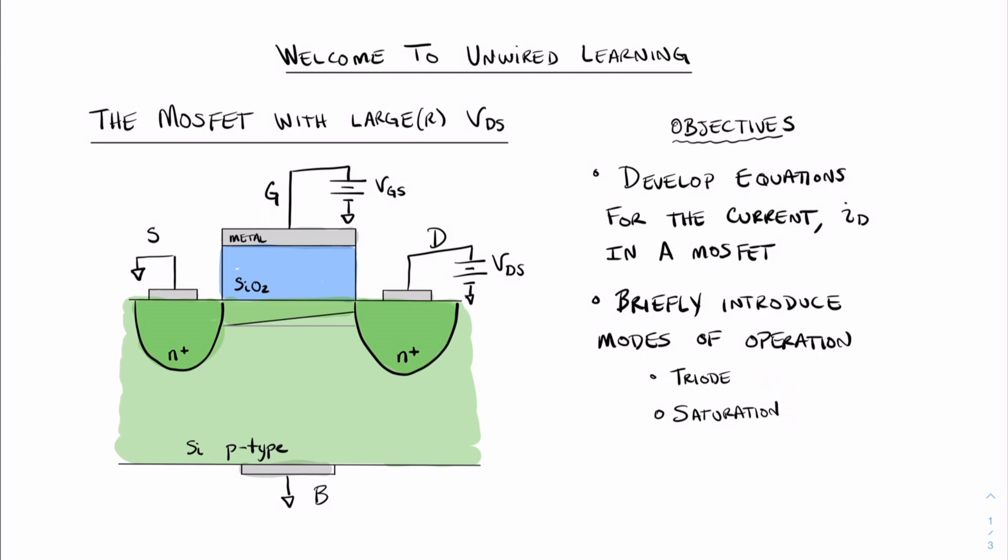The reason that this is important is because when we have a larger value of VDS, we have a significant electric field in the direction from D to S, as well as the electric field that we have from G to body, and this affects the channel shape.